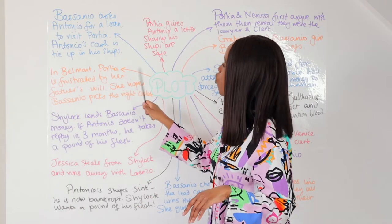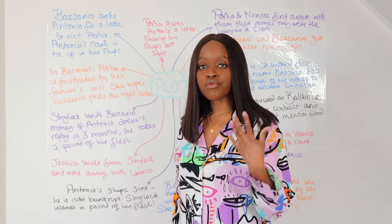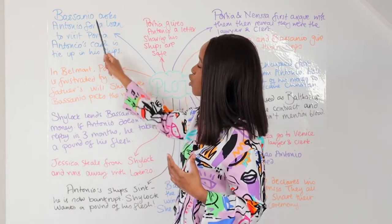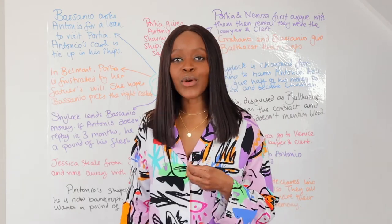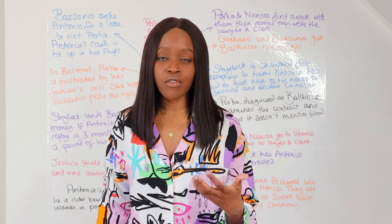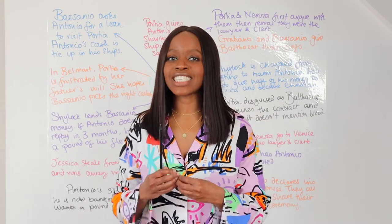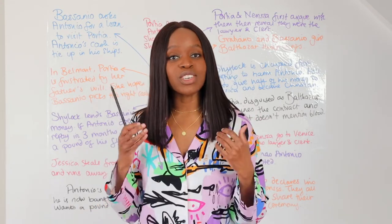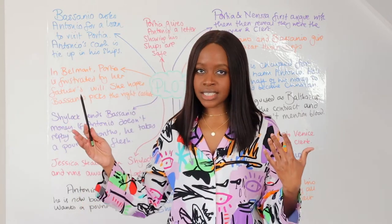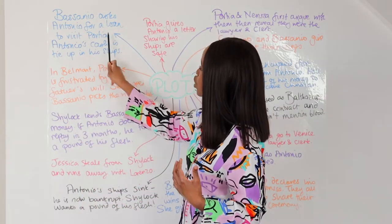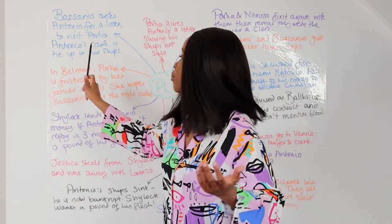The play begins when we meet Bassanio and Antonio, who are really good friends. We learn that Bassanio needs 3,000 ducats as a loan in order to go and win the hand of a very rich heiress called Portia. She's very rich and very beautiful, but most importantly she has lots of money and Bassanio is really bad with his money, so if he were to marry Portia he'd be able to clear all his debts. Bassanio asks Antonio for a loan to visit Portia and win her hand in marriage when he goes to Belmont.